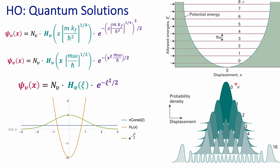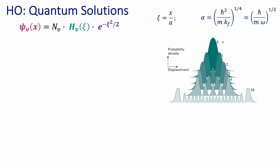Another thing you can notice is that as the principal quantum number increases, there is less probability density around the equilibrium position and more probability density around the extremes of that distribution. These extreme points are what we call the turning points of your vibration, and the fact that this probability is increasing at those extremes tells us that as the principal quantum number increases, your problem becomes more and more like the classical harmonic oscillator. So we found that the Hermite polynomials are a very important part of that wave function.